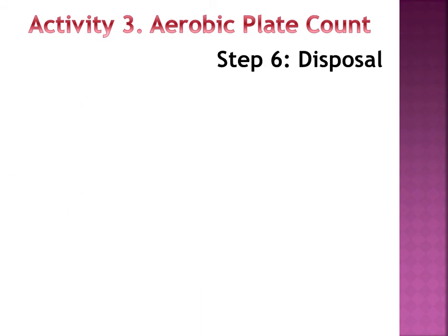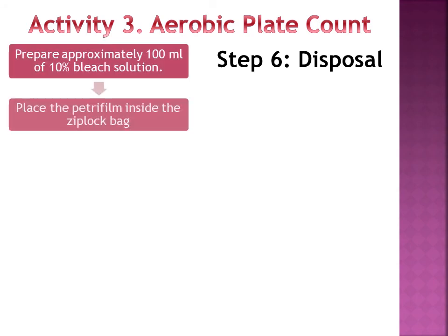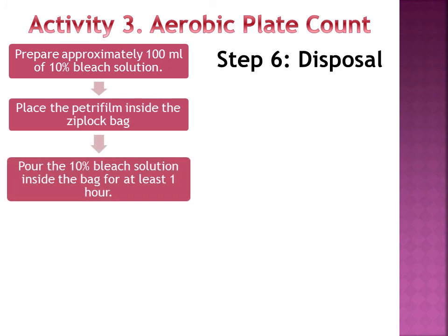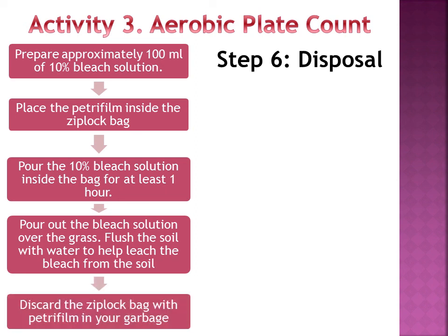If you are done, properly dispose of the petrifilm. Prepare approximately 100 ml of 10% bleach solution. Place the petrifilm inside a ziplock bag. Pour the 10% bleach solution inside the bag for at least 1 hour. Pour out the bleach solution over the grass, then flush the soil with water to help dilute the bleach from the soil, especially if you later want to grow plants or grass on or near the same area. Discard the ziplock bag with petrifilm in your garbage.